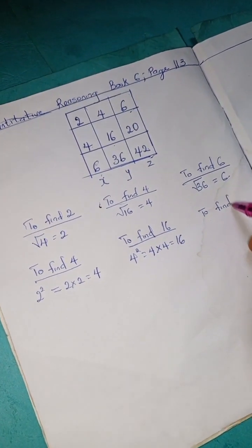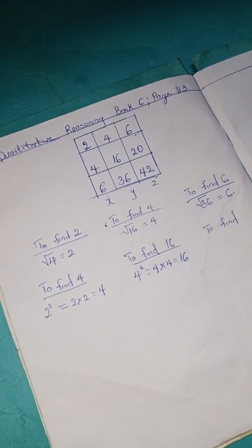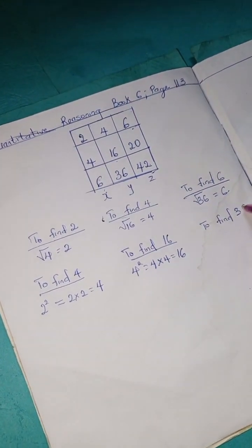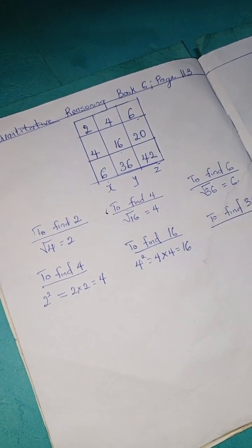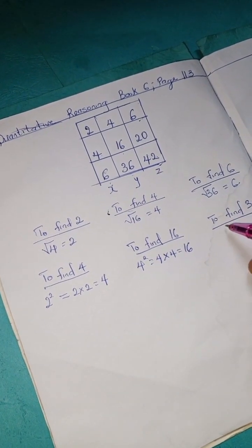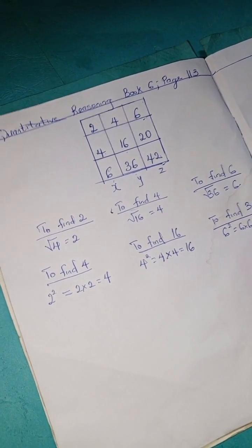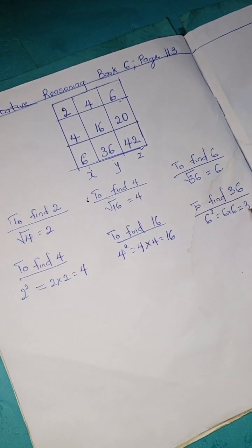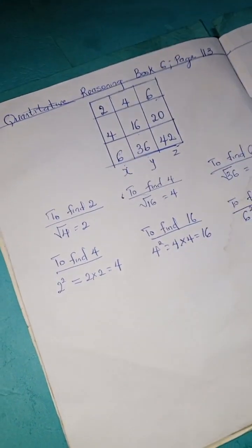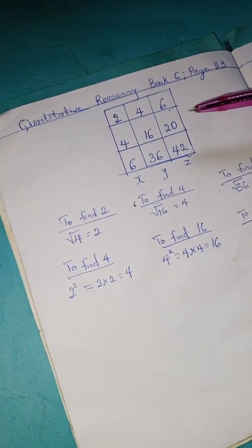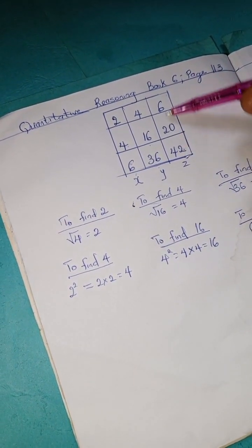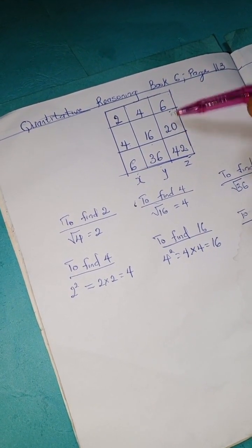To find 36, we're going to do the same thing: 6 squared, that's 6 times 6, that's 36. All right, so we're done with X and Y, so we're going to go over to Z.